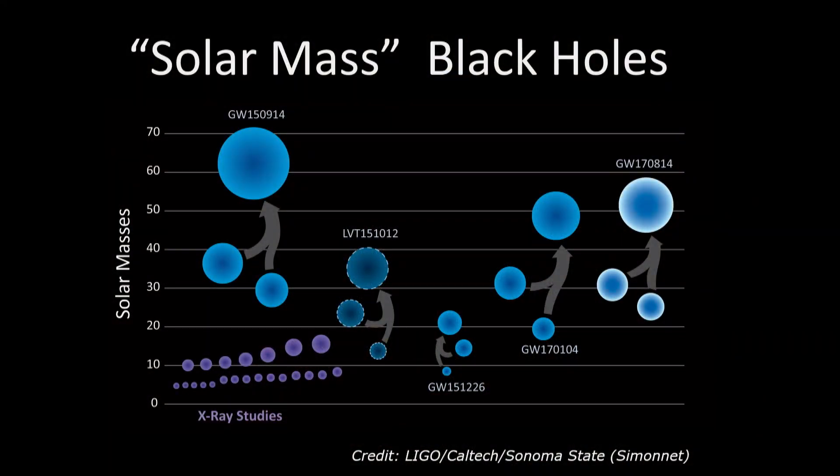We've discovered many more than one. Now we have about ten different black hole pairs discovered — not all shown in that picture — and instruments in Europe have also measured many black hole pairs with us. They've now become a common part of our astronomical heritage.